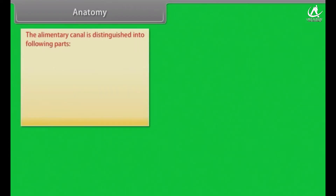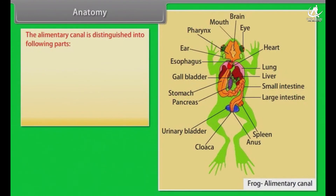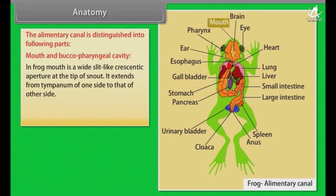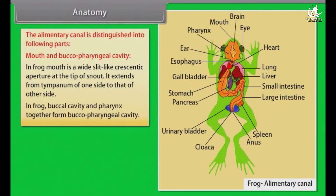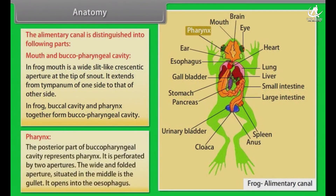Anatomy. The alimentary canal is distinguished into the following parts. In frog, the mouth is a wide slit-like aperture at the tip of the snout, extending from the tympanum of one side to that of the other side. The buccal cavity and pharynx together form the buccal pharyngeal cavity. The posterior part of the buccal pharyngeal cavity represents the pharynx. It is perforated by two apertures; the wide and folded aperture situated in the middle is the gullet, which opens into the oesophagus.